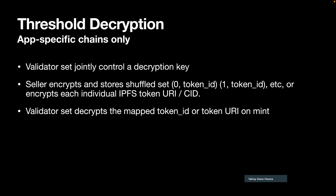Another potential approach is threshold decryption, though we've decided to go with the random shuffling approach. In Cosmos and Tendermint you have a validator set that could control a decryption key. When the seller publishes the collection, they can encrypt the IPFS CIDs or encrypt a shuffled version of the set. During the mint operation, the validator set decrypts either the token ID or the URI. This is something you can only do in an app-specific chain, and it's probably cheaper than verifying a random beacon — a more advanced approach we might explore later.